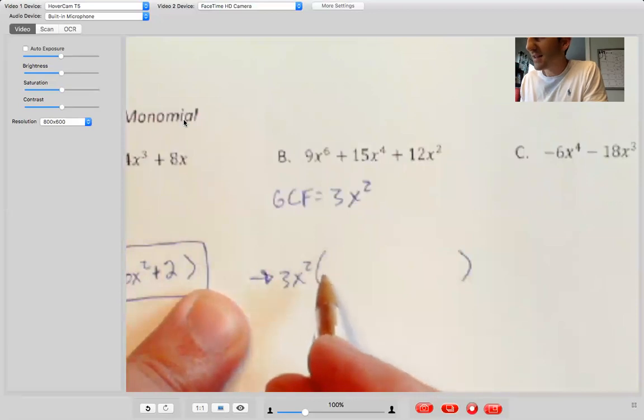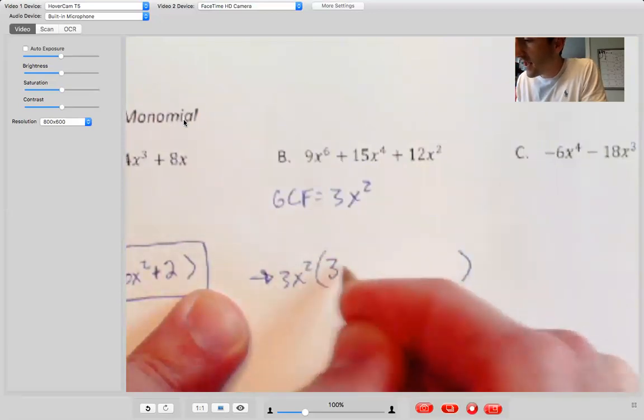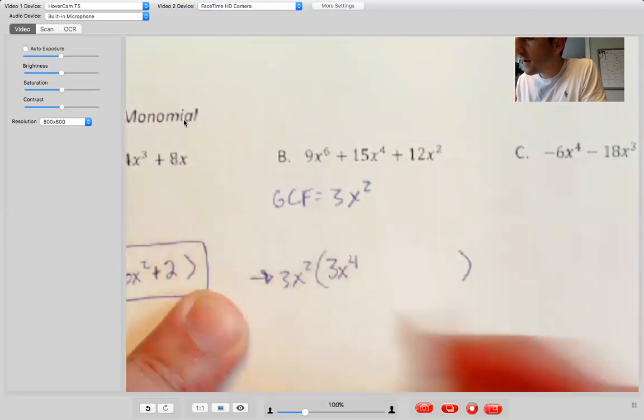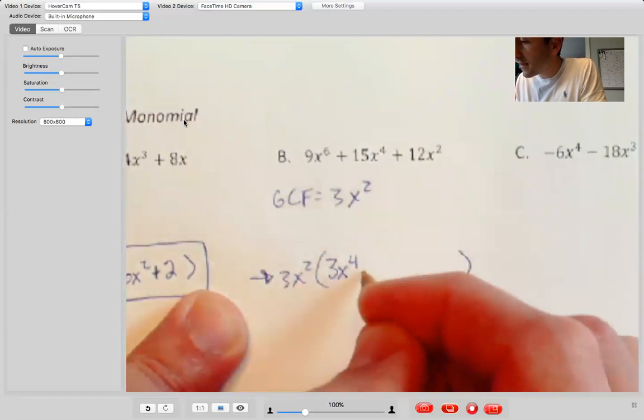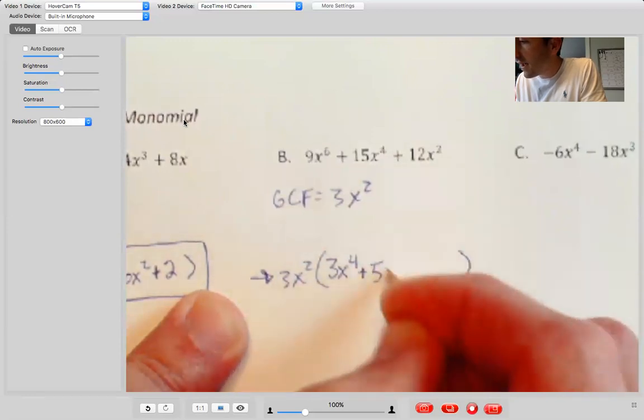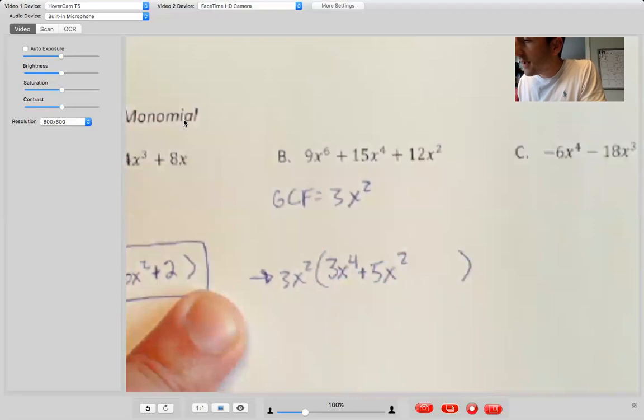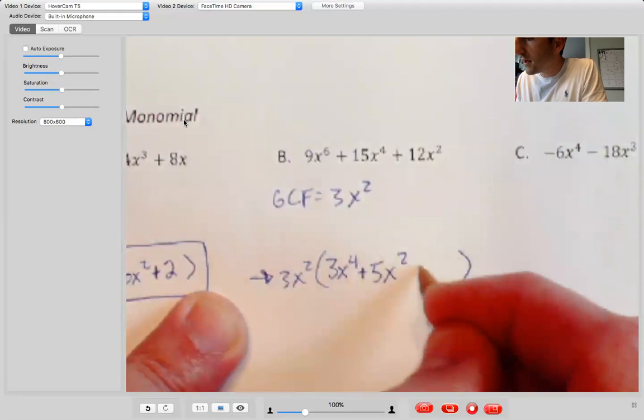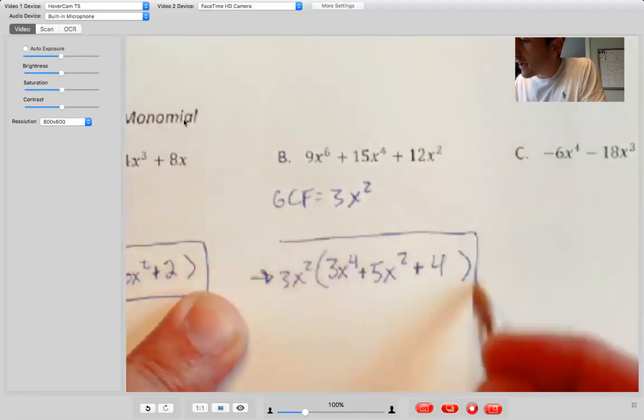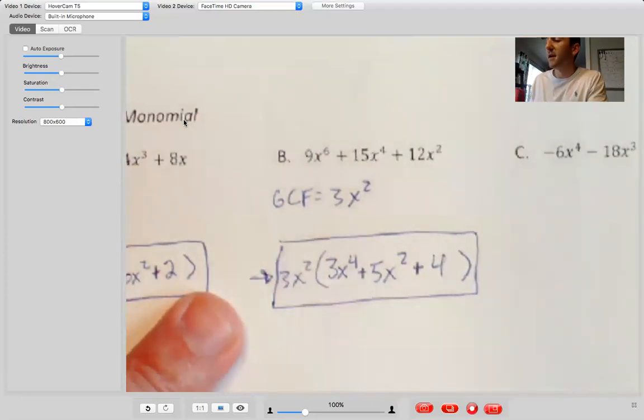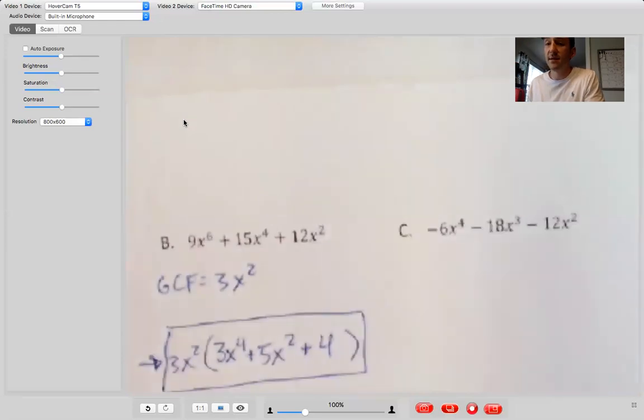So that's going to be the front part of my answer. And I'm going to put my long parentheses. Okay. And then we go term by term. Nine X to the six over three X squared is going to be three X to the four, 15 X to the four over three X squared is going to be plus five X squared. And then 12 X squared over three X squared is just going to be plus four. And guys, just at any point, once you feel like you've got this, it might be a good idea to pause and work ahead of me and then check like we do in class.